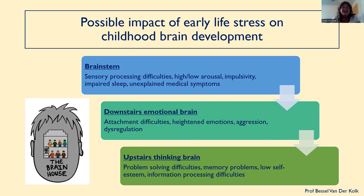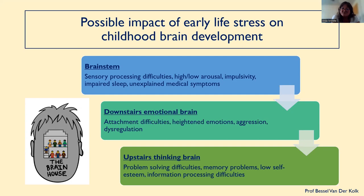The experience of early life stress and trauma can impact on a child's brain development, depending on what stage of development their brain is in and the severity and chronicity of the traumatic experience. The earliest part of the brain to develop in the baby is the brainstem, which provides essential functions for life — setting up our sensory system, controlling automatic functions such as heartbeat and breathing. When significant early life stress occurs around this developmental stage, it may result in difficulties with sensory processing, high or low emotional arousal, impulsivity, impaired sleep, and unexplained medical symptoms.